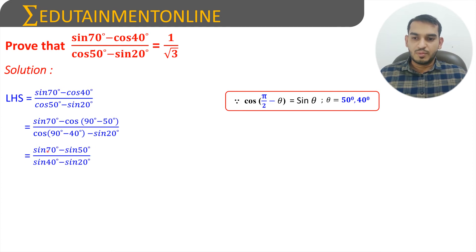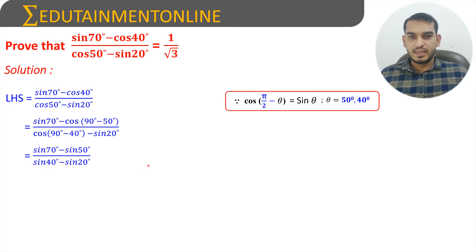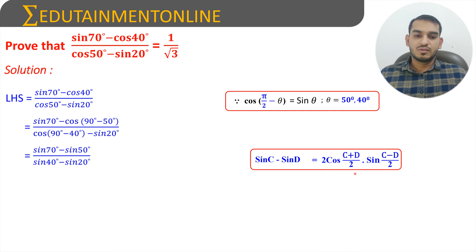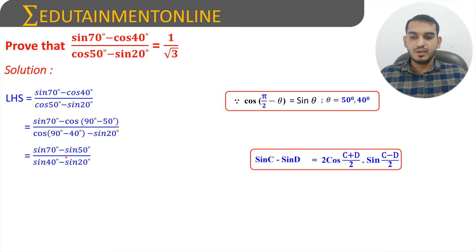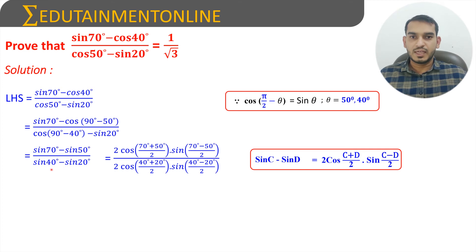Now the numerator is in the form of sin C minus sin D and the denominator is also in the form of sin C minus sin D. We know that sin C minus sin D equals 2 cos((C+D)/2) into sin((C-D)/2). Applying this formula to numerator and denominator separately, we get 2 cos((70+50)/2) sin((70-50)/2) divided by 2 cos((40+20)/2) sin((40-20)/2).